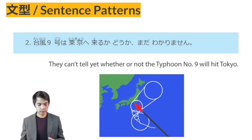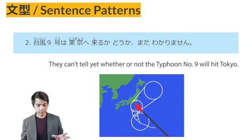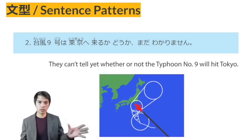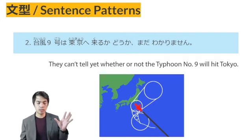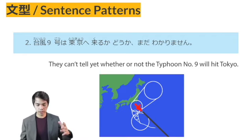In this sentence, KURUKA DOKA — TAIFU KYUGO WA — Typhoon No. 9 — TOKYO WE KURU — comes to Tokyo, or will hit Tokyo — KA DOKA. The KA DOKA can be translated as 'whether or not.' KA DOKA MADA WAKARIMASEN — we still don't know, or they still can't tell yet.